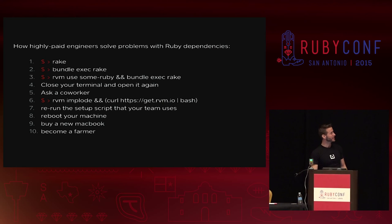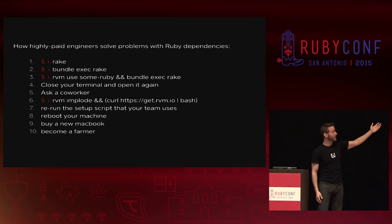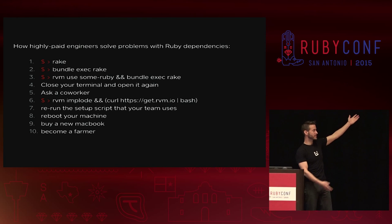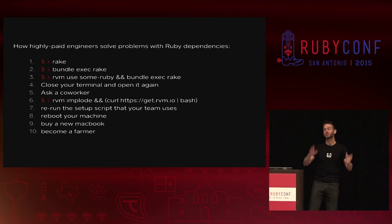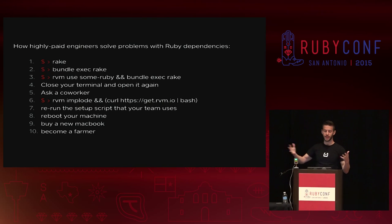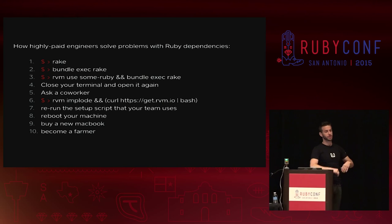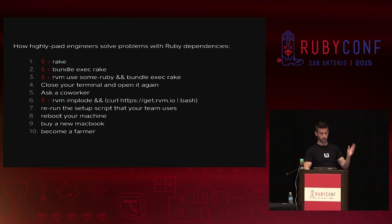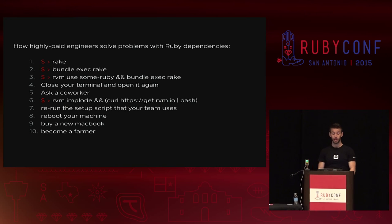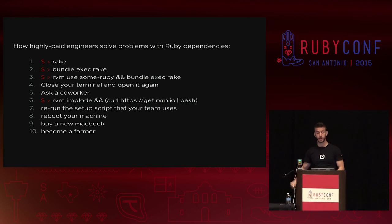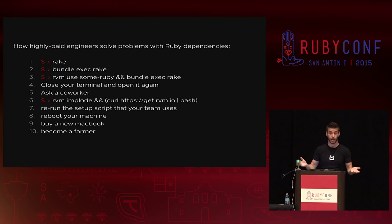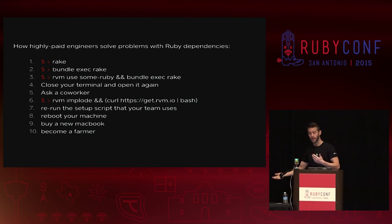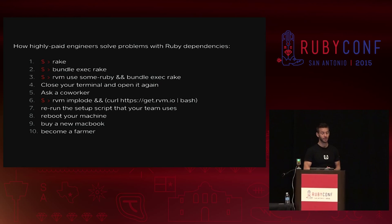The debugging checklist goes something like: run rake, then oh wait, bundle exec rake, then RVM use the right thing and bundle exec rake, or close your terminal and start over. Ask a coworker — if Danielle can't figure it out, she'll tell you to close your terminal and start over. Then RVM implode, reinstall RVM, compile some Rubies from scratch. Rerun the bespoke setup script. Reboot your machine. Or just buy a new computer — and then definitely become a farmer.